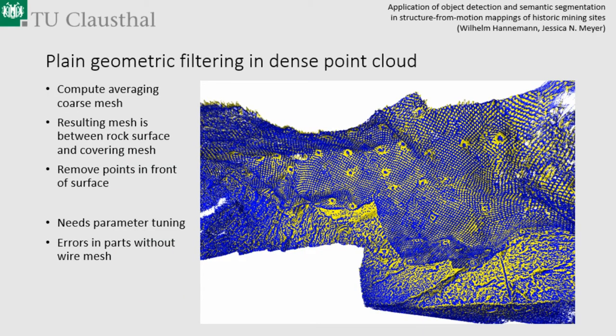We first tested a simple geometric approach: use the point cloud, create an averaging mesh which lies between the wires and the stones, and fill it out. It works, but only in areas where there is a mesh — in all other areas it cuts off the stones. So we had to segment our images into mesh parts and non-mesh parts.